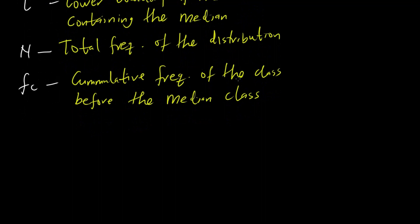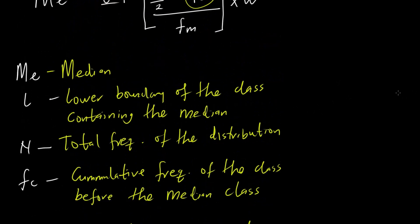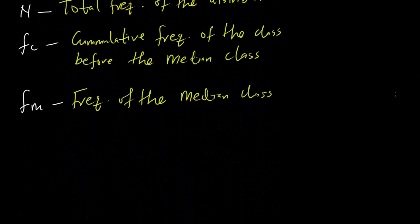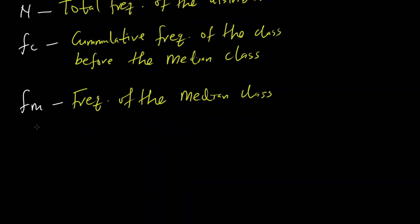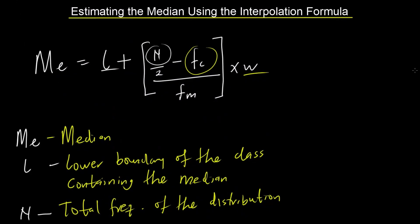We also have F subscript M from the formula, which is simply the frequency of the class interval containing the median — the frequency of the median class. And we have the last term W, which is usually the class size. After noting what each term stands for, we are going to use this formula to estimate the median using an example.